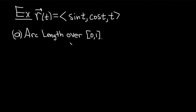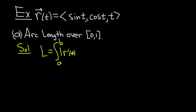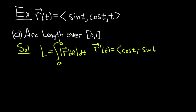We have a vector-valued function r of t equal to sine t, cosine t, t. We're being asked to find the arc length over the interval [0, 1]. The arc length is given by the formula: L equals the definite integral from a to b of the magnitude of r prime of t, integrated with respect to t. We'll start by finding the derivative of r. Since it's a vector-valued function, we just differentiate each component.